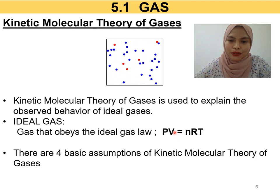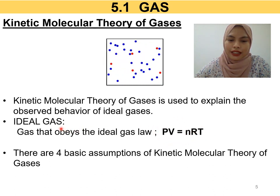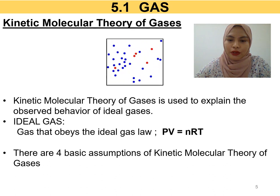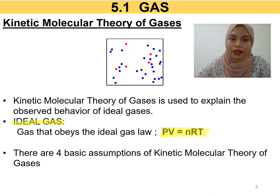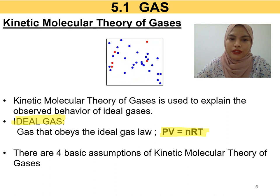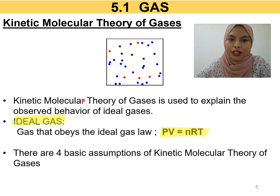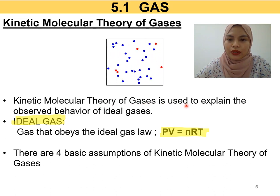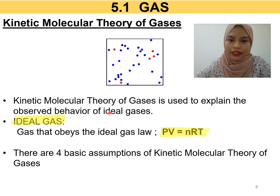Back in high school, the equation PV = nRT was used when dealing with gas. But actually, this equation PV = nRT is the ideal gas equation. Have you ever wondered how an ideal gas behaves? That's why you need to learn about kinetic molecular theory of gases, because kinetic molecular theory of gases is used to explain the observed behavior of an ideal gas.